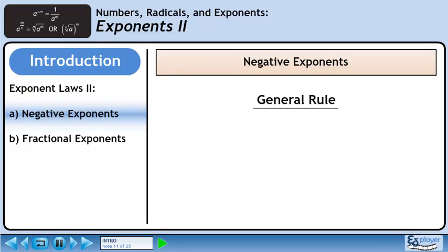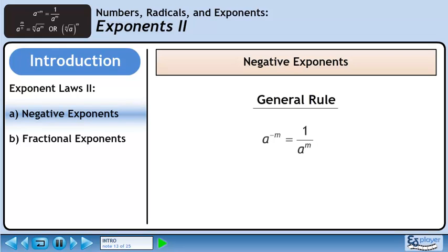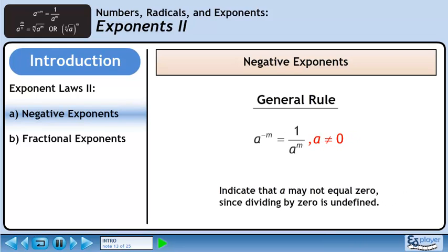Now we will establish a general rule for negative exponents. a raised to the power of minus m equals 1 over a to the power of m. We should also indicate that a cannot equal 0, since dividing by 0 is undefined.